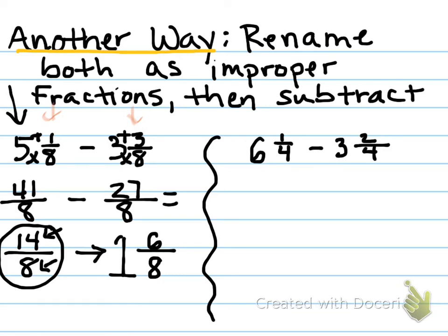Let's practice another one with this strategy. So let's rename both of these so that they are improper fractions. First one, four times six plus one. Well, four times six is twenty-four plus one is twenty-five. Denominator stays the same. Take away four times three plus two. Four times three is twelve, twelve plus two is fourteen. Denominator stays the same. Now you just subtract the numerators. Twenty-five take away fourteen is eleven. Denominator stays the same.